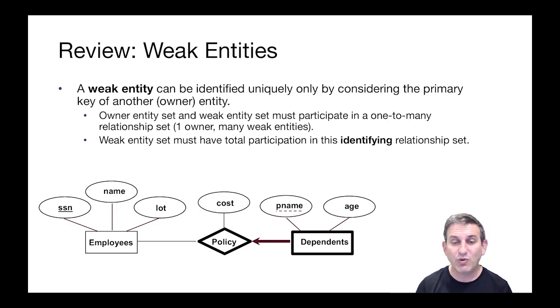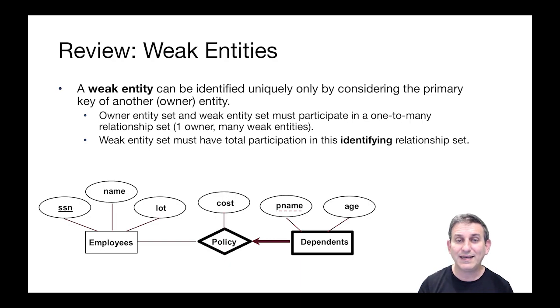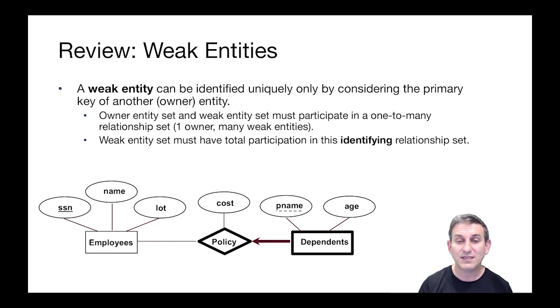We have a bold edge between dependence and policies. To notate the weak entity set, we put bold edges around the dependence and policies as well. And the partial key of pname is a dotted line.